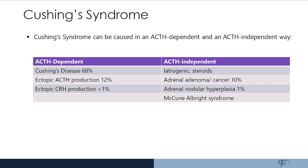ACTH independent causes of Cushing's Syndrome include iatrogenic administration of steroids, an adrenal adenoma, adrenal nodular hyperplasia, or McCune-Albright syndrome.